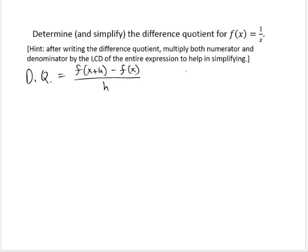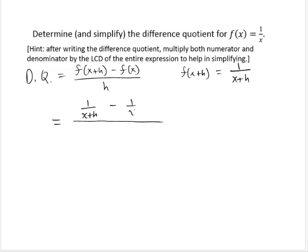So for this function, f of x plus h would be 1 over x plus h, instead of an x we write x plus h. So our difference quotient becomes 1 over x plus h, minus 1 over x, all over h.